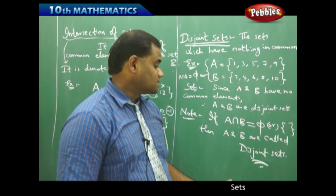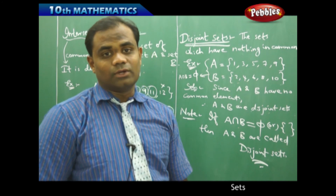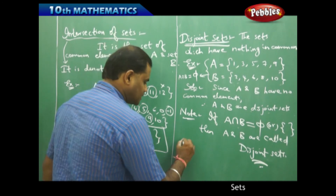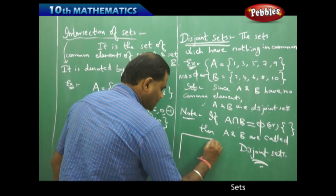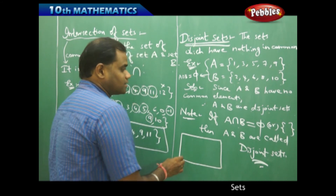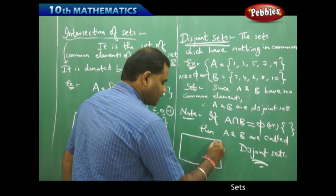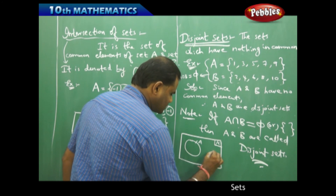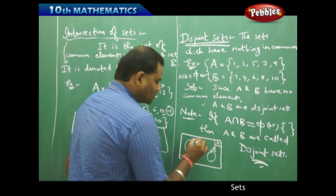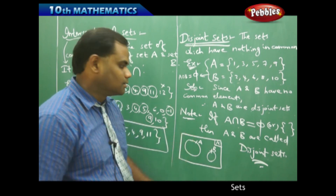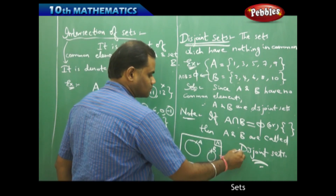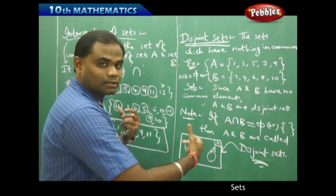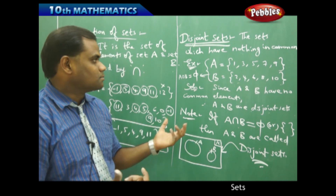How do we represent disjoint sets in Venn diagrammatic form? Disjoint sets are denoted by drawing the two circles A and B separately — not joined — because nothing is common between them. They are separated circles inside the universal rectangle. This is how disjoint sets are represented in a Venn diagram: they are separated, not joined.